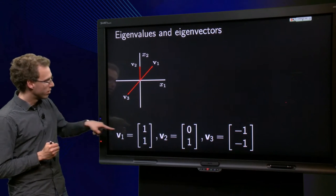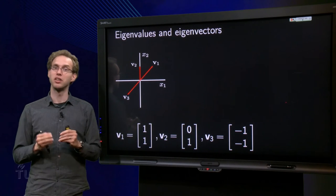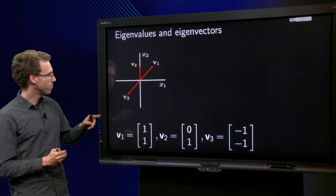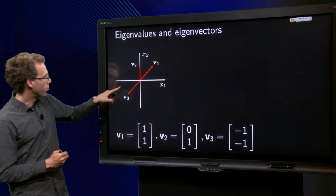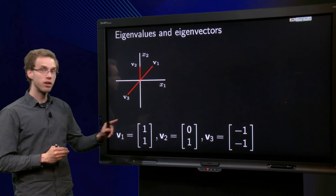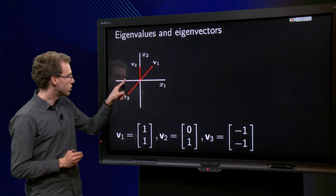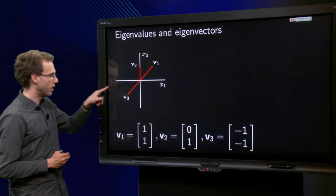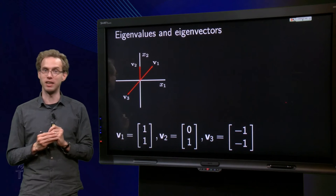We have here three vectors: v1 = (1, 1), v2 = (0, 1), and v3 = (-1, -1). And then we have a matrix A. We are going to compute A times v1, A times v2, and A times v3.